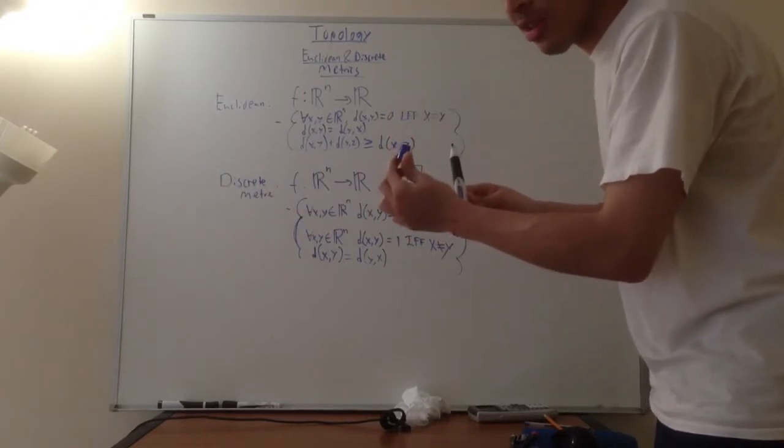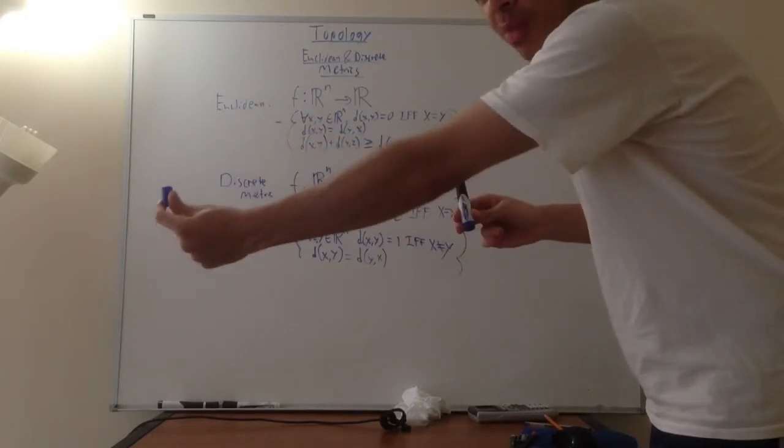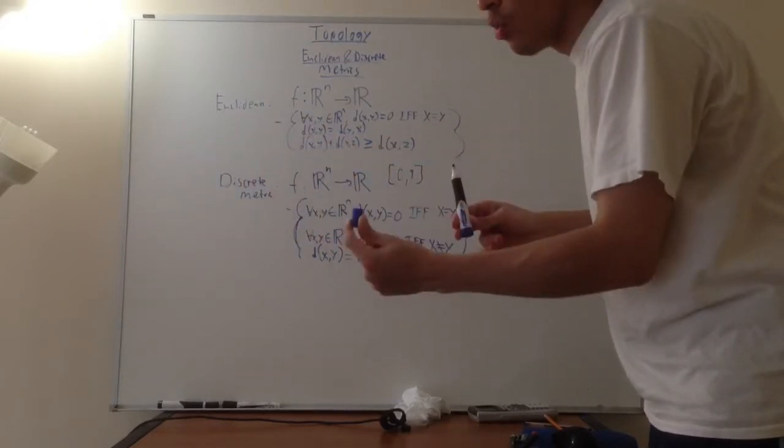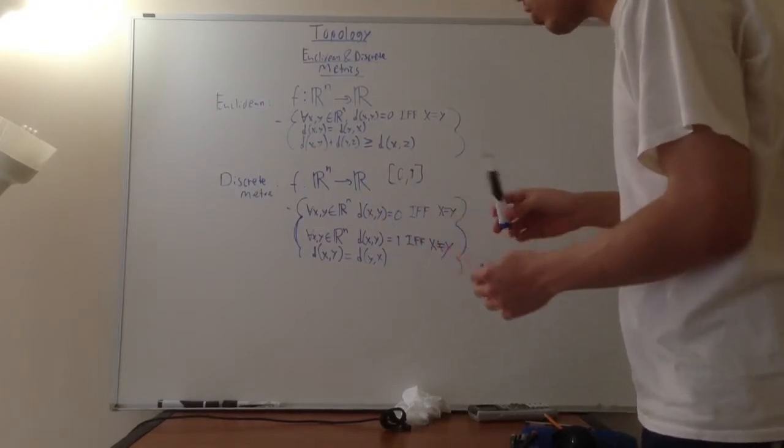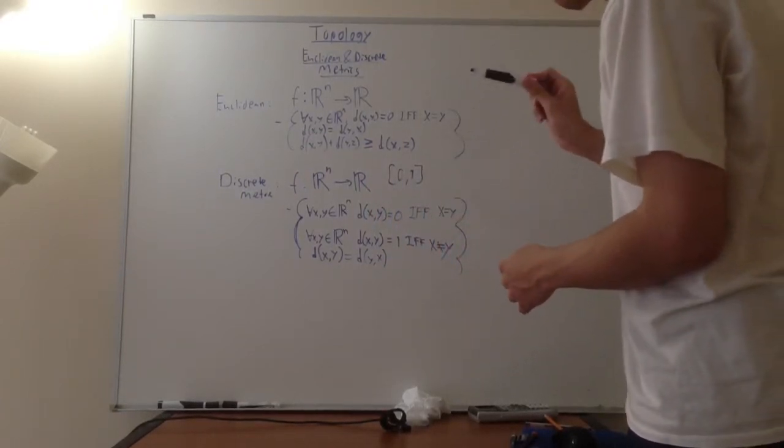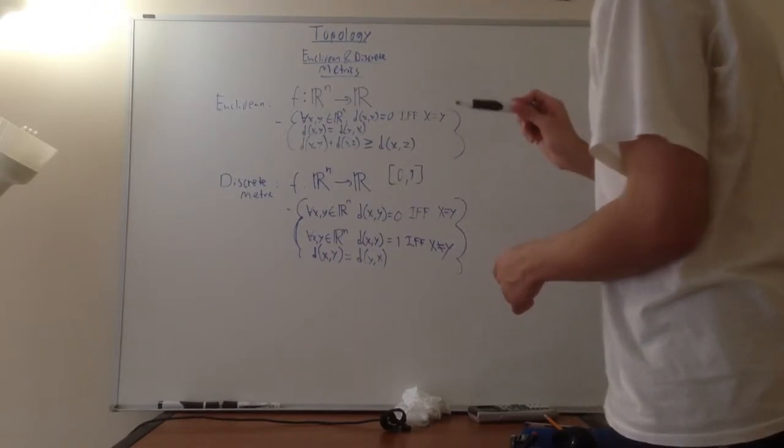For the discrete metric, this is not the case. If I go here, the distance is 1. And if I go here, the distance is 1. And I did this demonstration in my previous video as well. Well, that is very important, that's essentially one of the defining properties of the discrete metric.